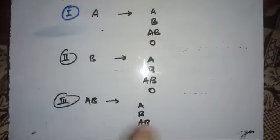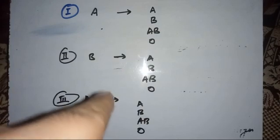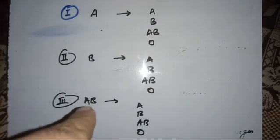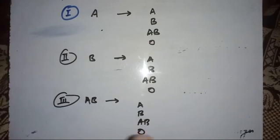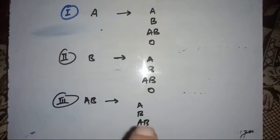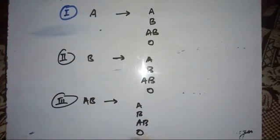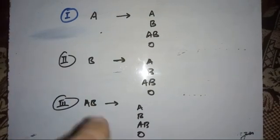AB to AB: similar can transfuse to similar, no reaction. AB to O: AB has both A antigen and B antigen, but in O there are antibodies against both A and B. So there will be a massive transfusion reaction in the case of AB transfused to O.